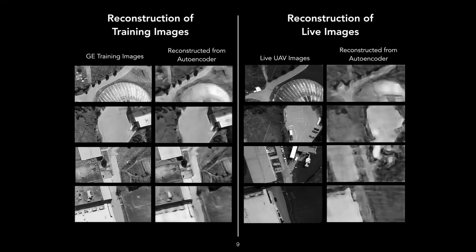So here we have some examples of the reconstruction from the encoded images. On the left, the Google Earth training images have been reconstructed quite well. On the right, we have the reconstruction of some of the real images collected by the UAV. These were not used in the training at all, and you can see that the reconstruction is not as sharp as the Google Earth images, but most of the core structural information is retained, and this is enough for the kernel computation we use in the next step.